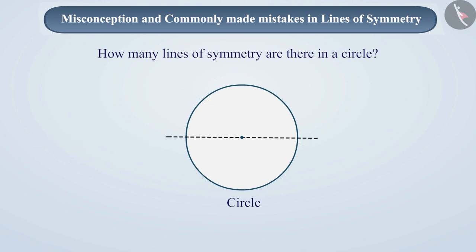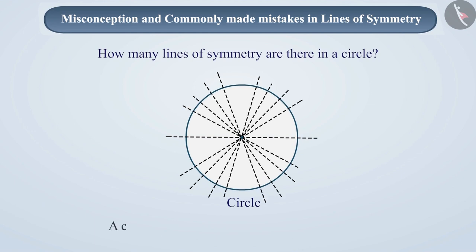Any line passing through the center of the circle divides it into two symmetrical parts. Since we can draw an infinite number of lines of symmetry through the center, there are infinitely many lines of symmetry in a circle.